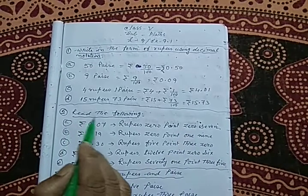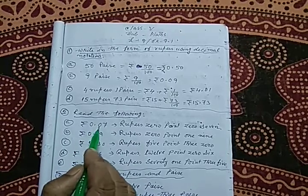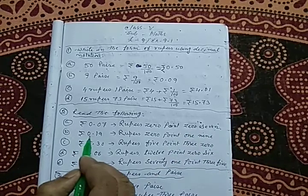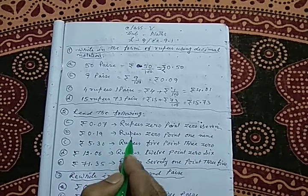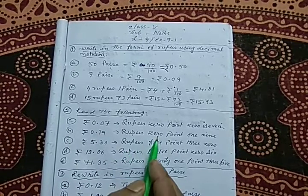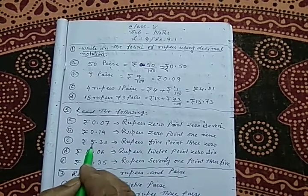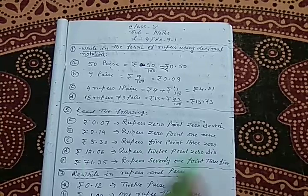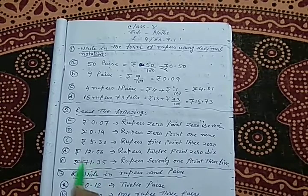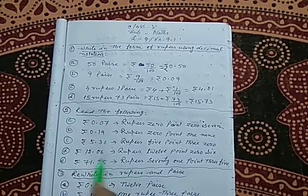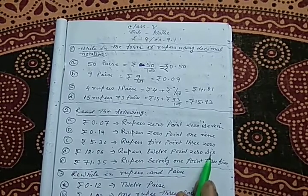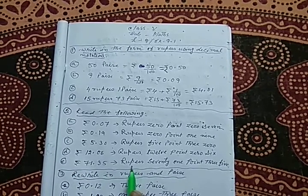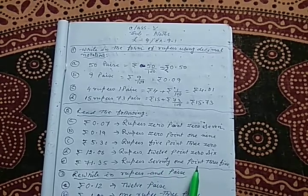In question 2, we are given decimal amounts to read aloud. Rupees 0.07 is read as seven paisa. Rupees 0.19 is read as rupees 0.19. In C, rupees 5.30 means rupees 5.30. In D, rupees 12.06 is read as rupees 12.06. In E, rupees 71.37 is read as rupees 71.37.